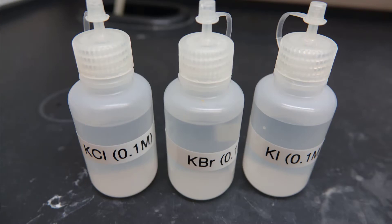The clear bottles labeled KCl, KBr, and KI are potassium chloride, potassium bromide, and potassium iodide. These are the ionic forms of the halogens.